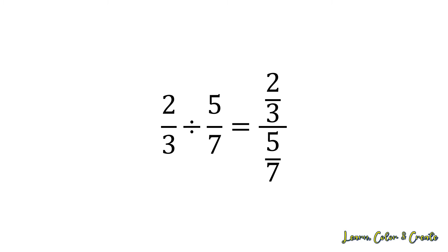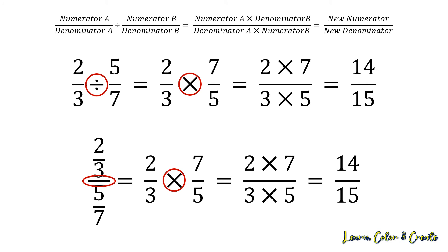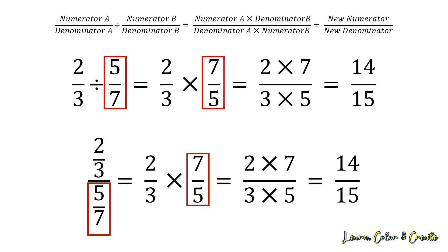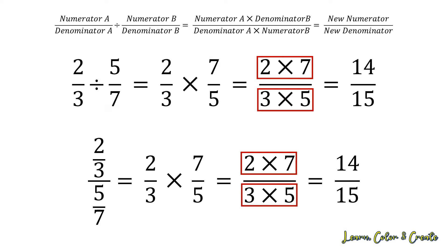Let's go ahead and solve this problem. We're first going to write down the first fraction, two-thirds, then change our division sign to a multiplication sign, then flip our second fraction of five-sevenths to seven-fifths. Multiplying straight across: two times seven gives a new numerator of 14, and three times five gives 15 on the bottom, for a final answer of 14 over 15.